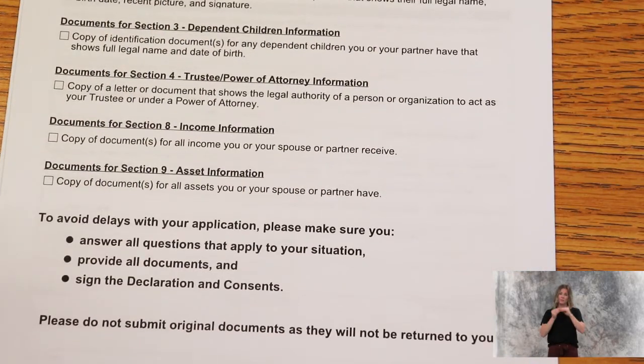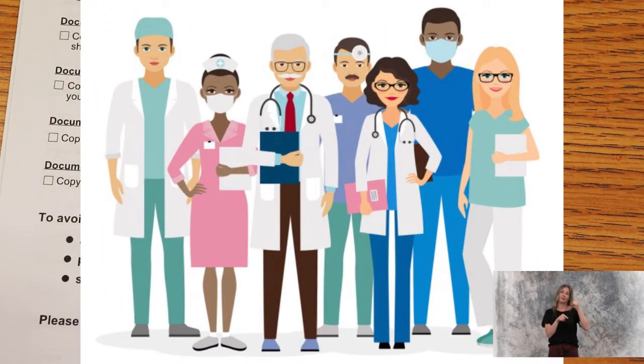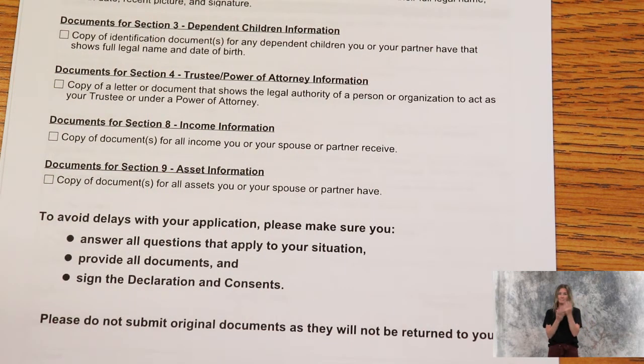The name, address, and phone number of any specialist you've seen in the past two years, and then confirmation of your income.